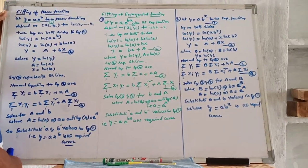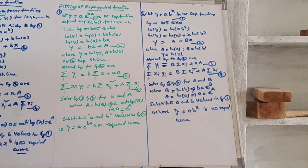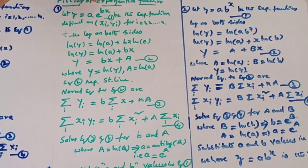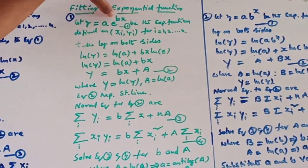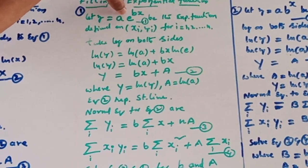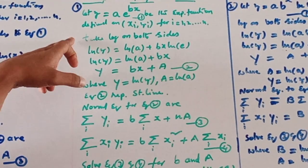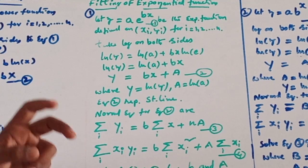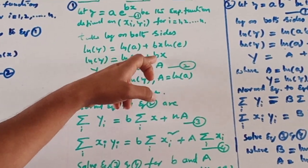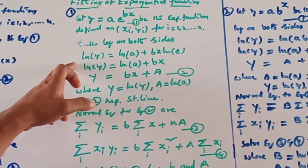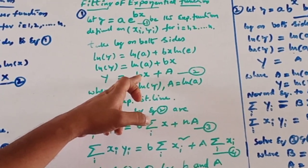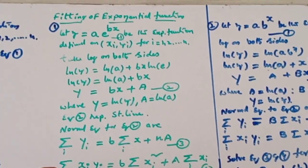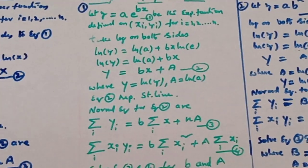Next, the exponential function of the form y equal to a times e to the power of Bx. Here also we reduce this to a straight line form by taking log on both sides. So log y equal to log a plus Bx times log e. Since log e equals 1, we get log y equal to log a plus B times x, which represents a straight line.